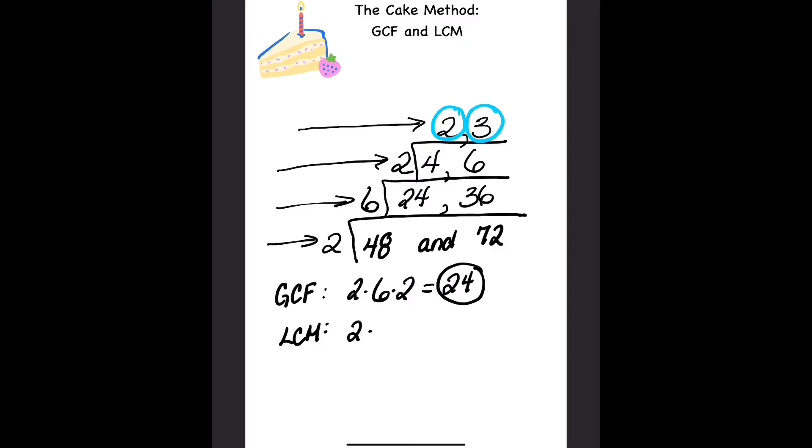So you're going to have 2 times 6 times 2 times 2 times 3, and since we already know this is 24, let's put them together. 24 times 6 gives us 144 as the least common multiple, and that makes sense.